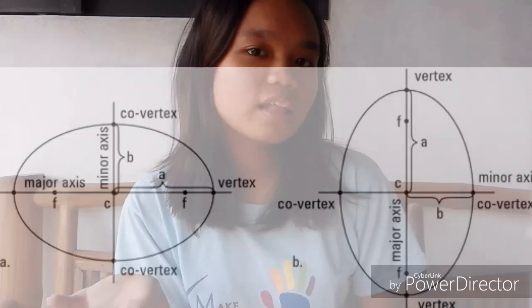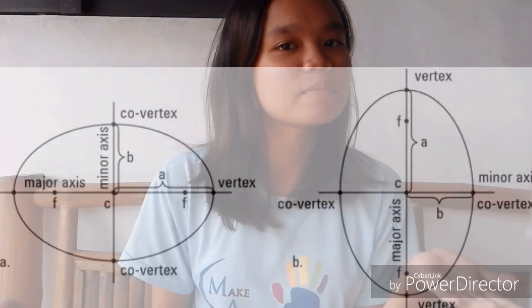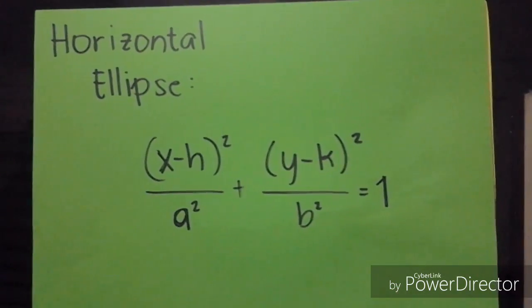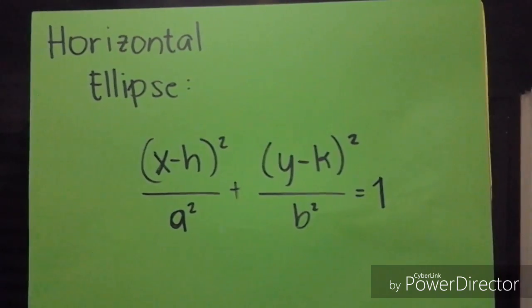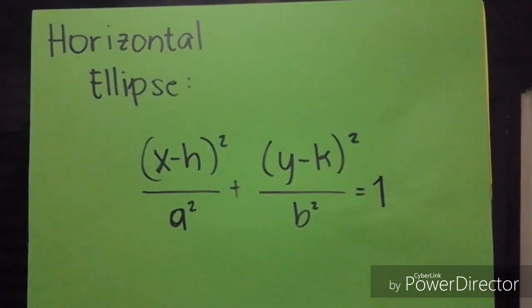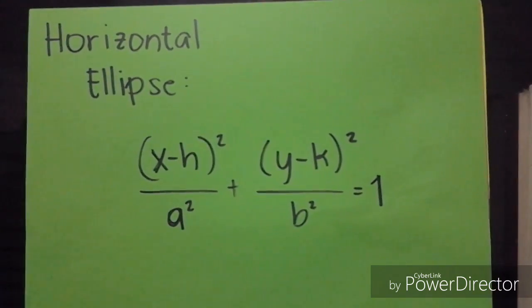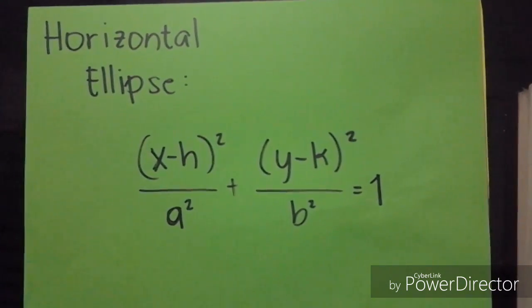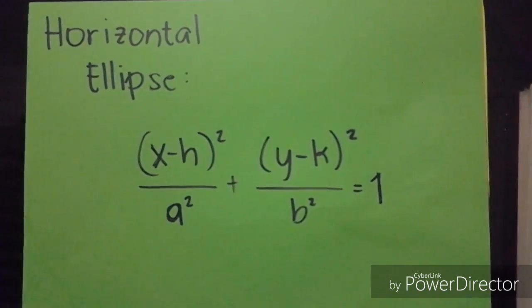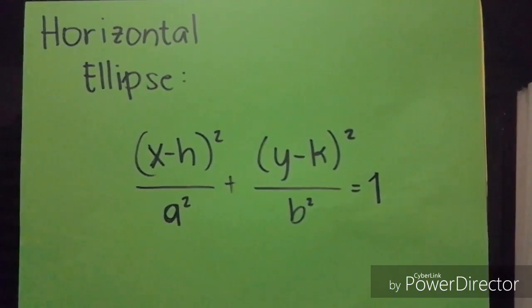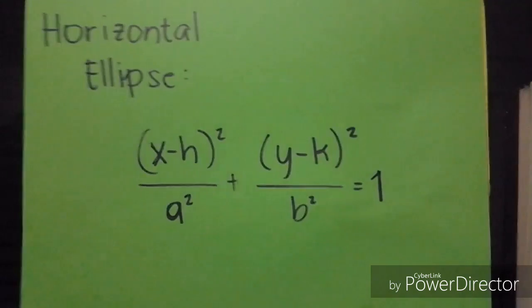First and foremost, there are two cases of ellipse. The first one is the horizontal ellipse and the other one is the vertical ellipse. The standard equation of a horizontal ellipse with center at (h, k) is the quantity of x minus h squared over a squared, plus the quantity of y minus k squared over b squared, is equal to 1.